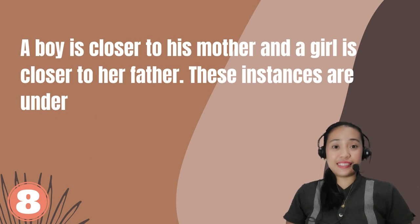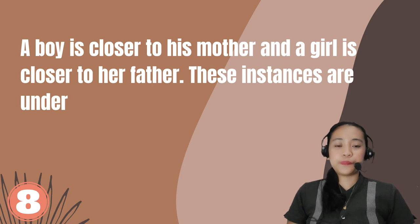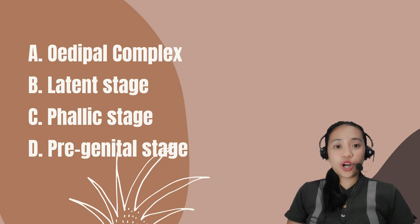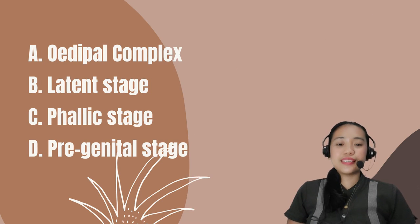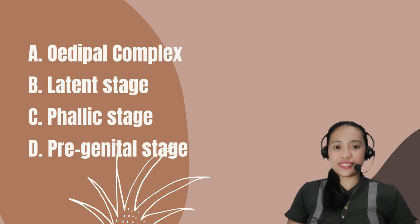Number 8. A boy is closer to his mother and a girl is closer to her father. These instances are under: A. Oedipal Complex. B. Latent Stage. C. Phallic Stage. D. Pregenital Stage.